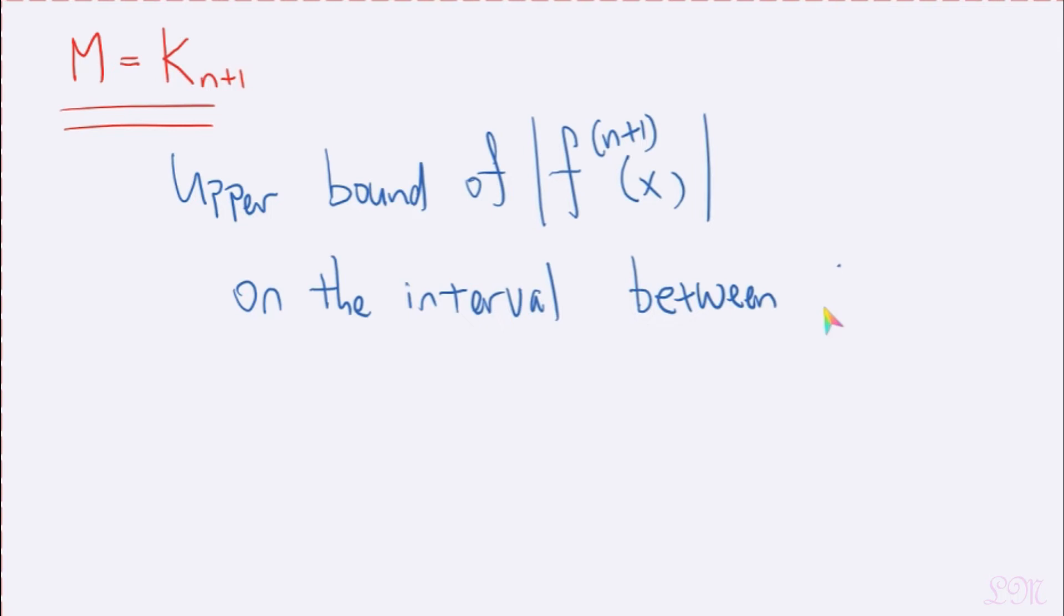So a is just like the a in Taylor series, which is the center. Oh, and sometimes people may use c instead of a for center. So the x here could be any x value that you're interested in. For example, if you're trying to approximate cosine 0.5, then 0.5 would be the x value.